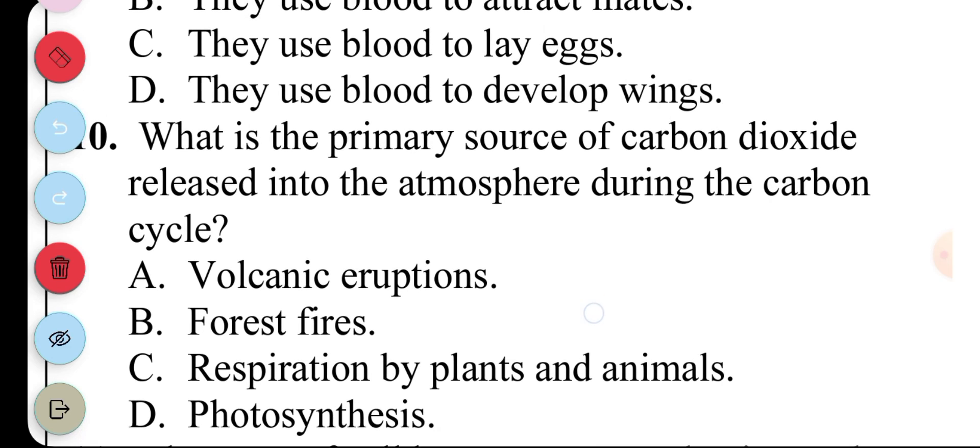Question 10. What is the primary source of carbon dioxide released into the atmosphere during the carbon cycle? A. Volcanic eruption, B. Forest fires, C. Respiration by plants and animals, D. Photosynthesis. The answer to question 10 is C. Respiration by plants and animals.